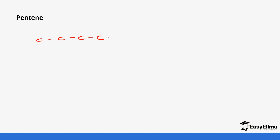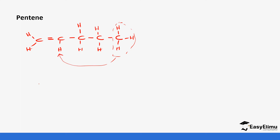Now let's look at pentene, which has five carbons, with the double bond at the first carbon. Place the hydrogens — always remember to count, and ensure that each carbon forms a maximum of four bonds; if it has more, you are wrong. We move the CH3 and start placing it at the end carbon first. So the first branch has four carbons remaining with CH3 here and the double bond here. Place the hydrogens and don't forget to count.